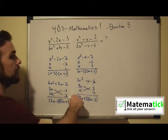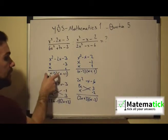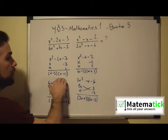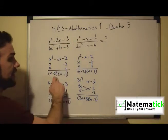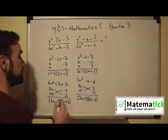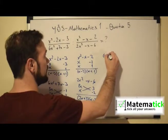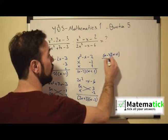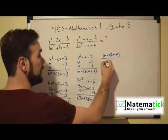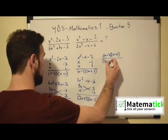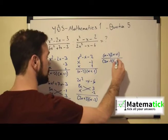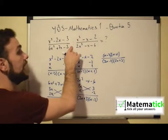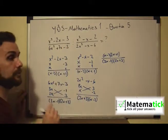Now all we have to do is rewrite the fractions using the factored forms we just found. So we have (x - 3)(x + 1) over (3x - 1)(2x + 3).